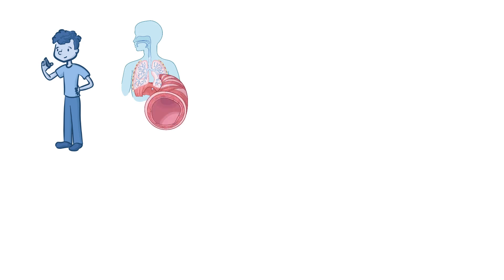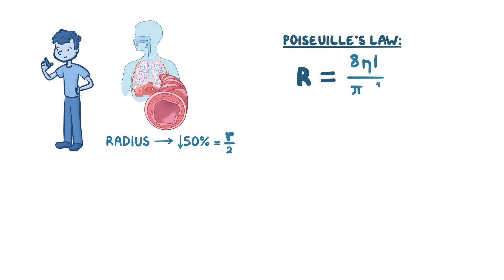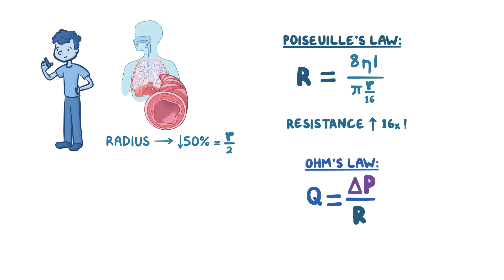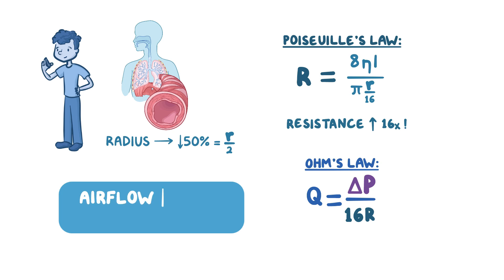Applying this to a real-life situation: in a person with chronic bronchitis or asthma, airway inflammation and edema leads to narrowing of the airways. If the radius of one bronchus decreases to half — meaning one-half r instead of r — plugging into Poiseuille's Law gives (1/2 r)^4, or one-sixteenth r^4, meaning resistance goes up by sixteen times. Going back to Ohm's Law and assuming delta P did not change, the new resistance of sixteen R results in airflow dropping by sixteen times — a huge drop for just halving the radius.